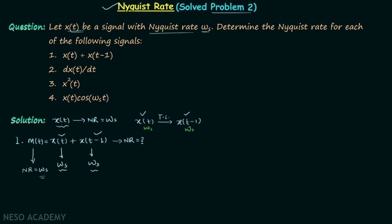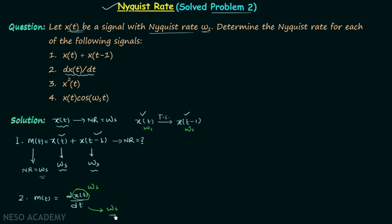Now we move on to the second message signal: m(t) = dx(t)/dt. This is the first-order derivative of x(t). We know that differentiation does not change the Nyquist rate. So if the original signal x(t) has Nyquist rate ω_s, then dx(t)/dt will also have the same Nyquist rate ω_s.